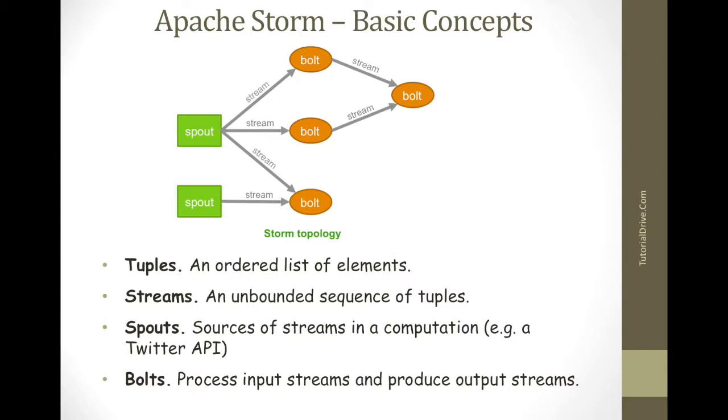Tuple is the main data structure in Storm and it is a list of ordered elements. By default a tuple supports all data types, generally it is modeled as a set of comma separated values and passed to the storm cluster.